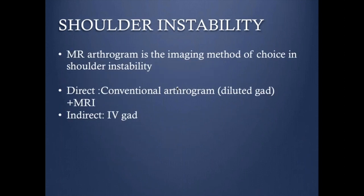For shoulder instability, I do MRI conventional arthrogram, and I think it still is the best for giving a proper evaluation of the joint itself. It is the modality of choice — not only for the arthrogram part, but more for the anatomical distinction it provides.